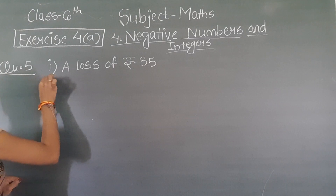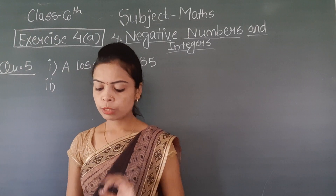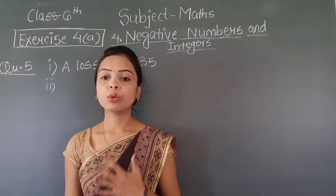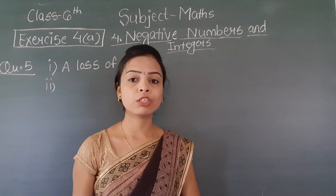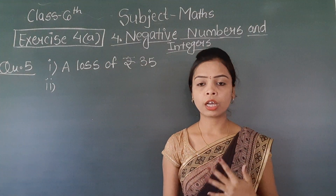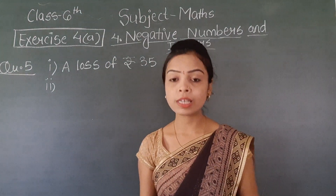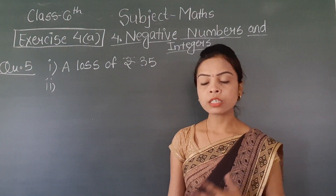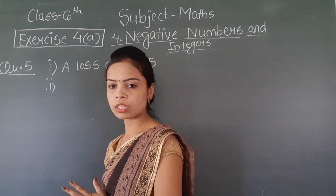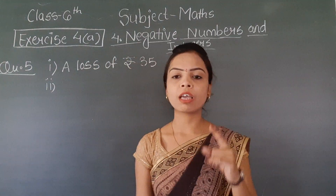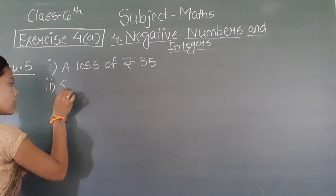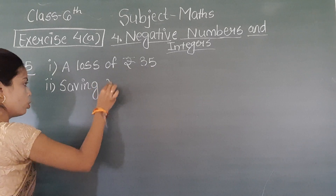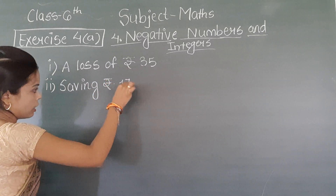The second question is: spending rupees 175. The opposite of spending is saving. So the answer for the second one is: saving rupees 175.